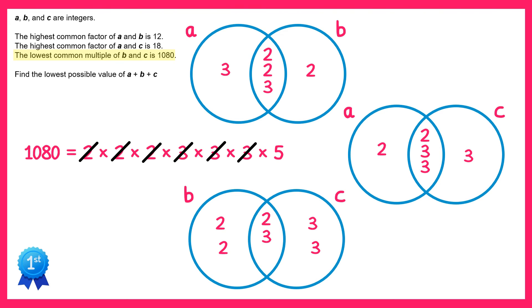Now we need to ask ourselves where should we place this 5? So it needs to go somewhere in the bottom diagram, and wherever we put it we're going to increase that number by a factor of 5. Since we're trying to make the lowest possible value of A plus B plus C, it doesn't make any sense to put it in the intersection, as that would increase both B and C by a factor of 5. So we want to place it in either just B or just C.